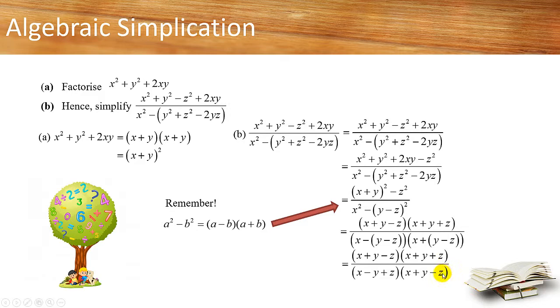And now, can you make a guess? What is the final answer? The final answer is equals to this. So why is this so? Because you are able to cancel away this common factor. Can you see? x plus y minus z is a common factor. So after you cancel these two terms away, you will be left with x plus y plus z over x minus y plus z.